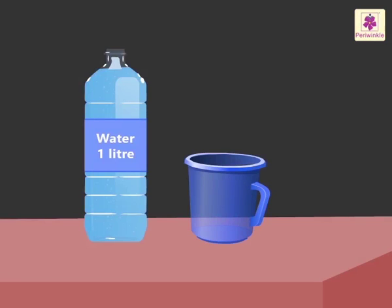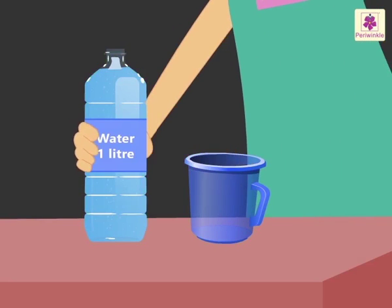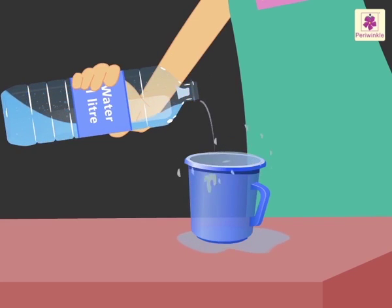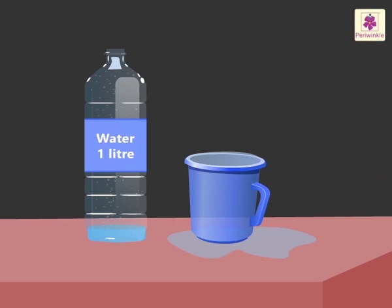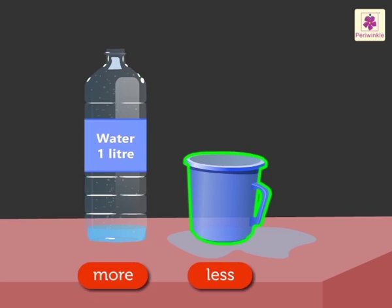Look, I have a bottle filled with water and an empty jar. Let's pour this water in the jar. Look, the water started overflowing and fell out of the jar. Hence, we can say that the capacity of the bottle is more than the jar — that is, the bottle can hold more water than the jar.